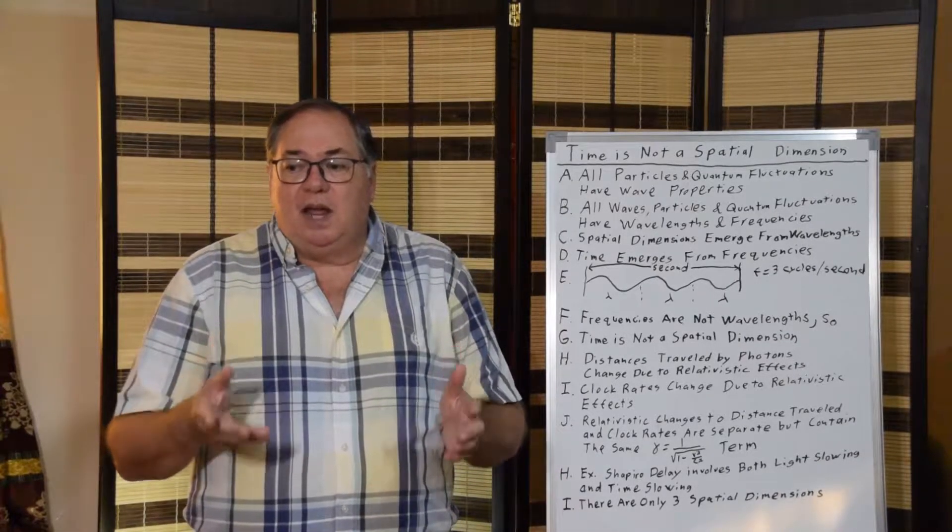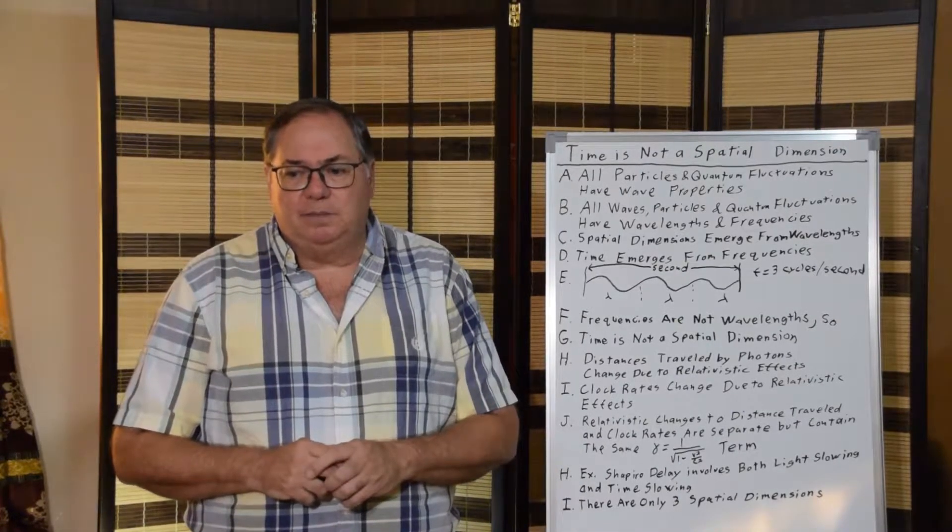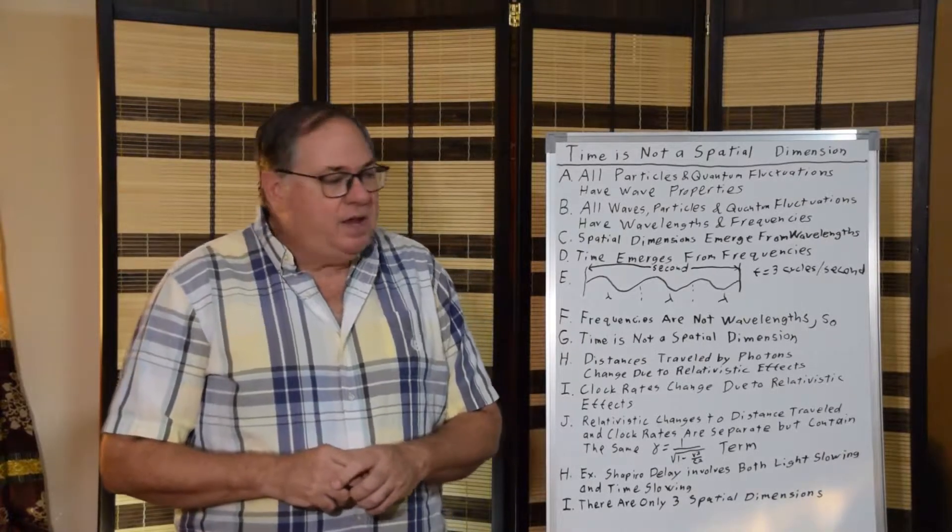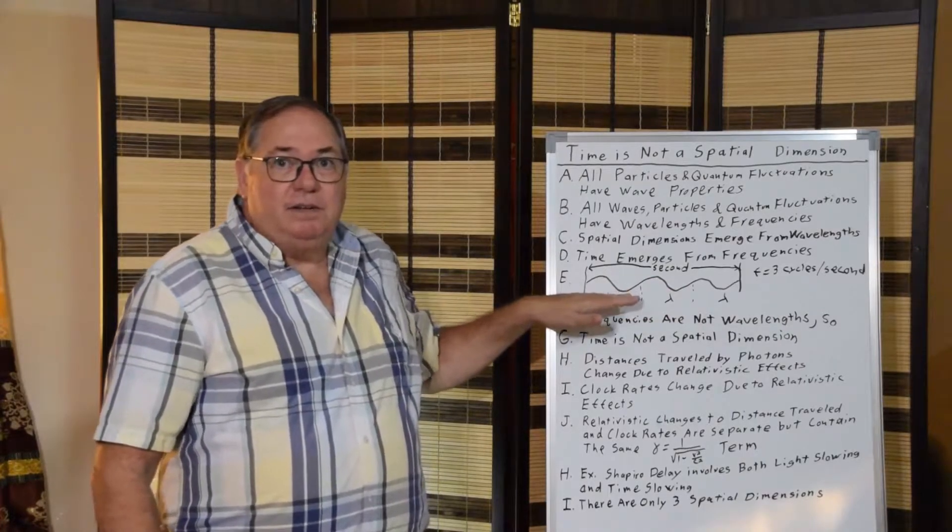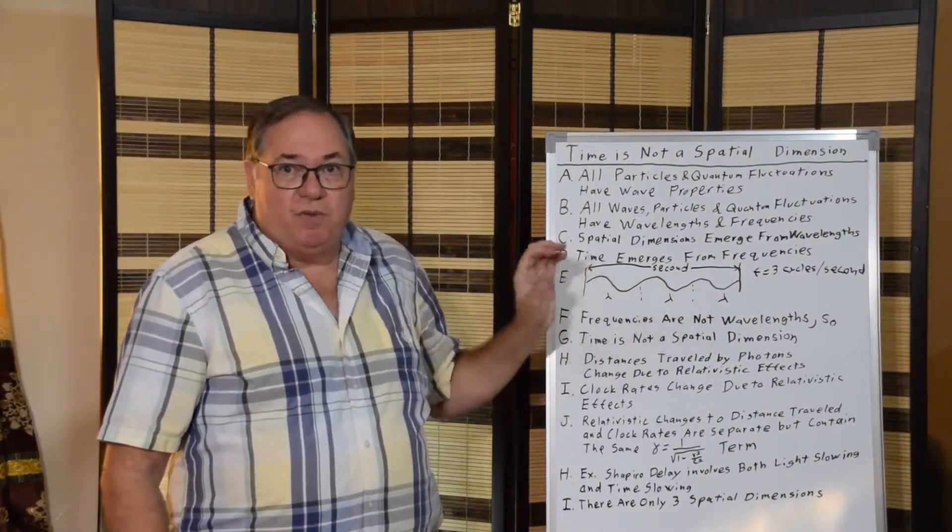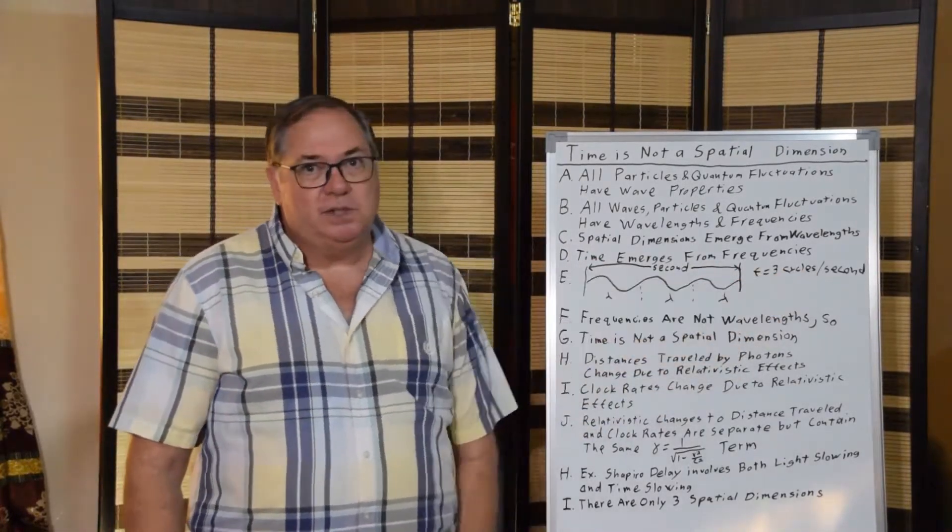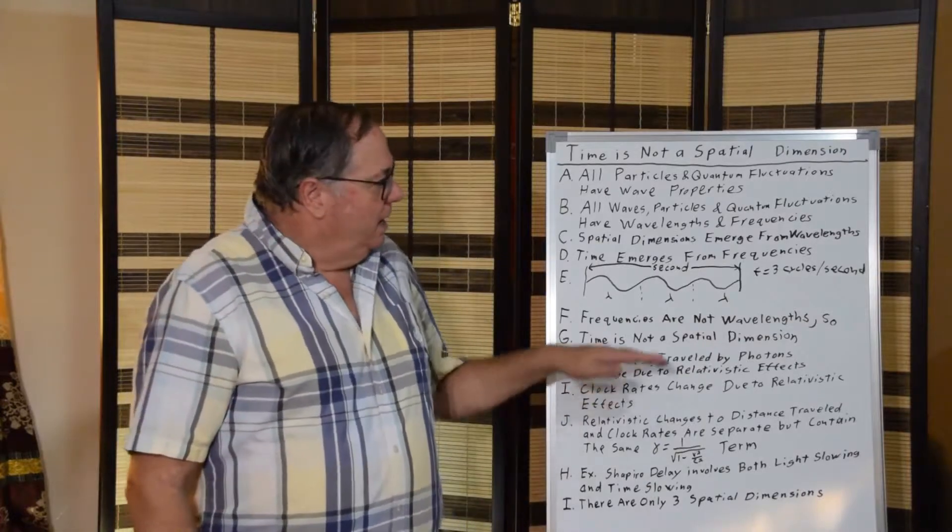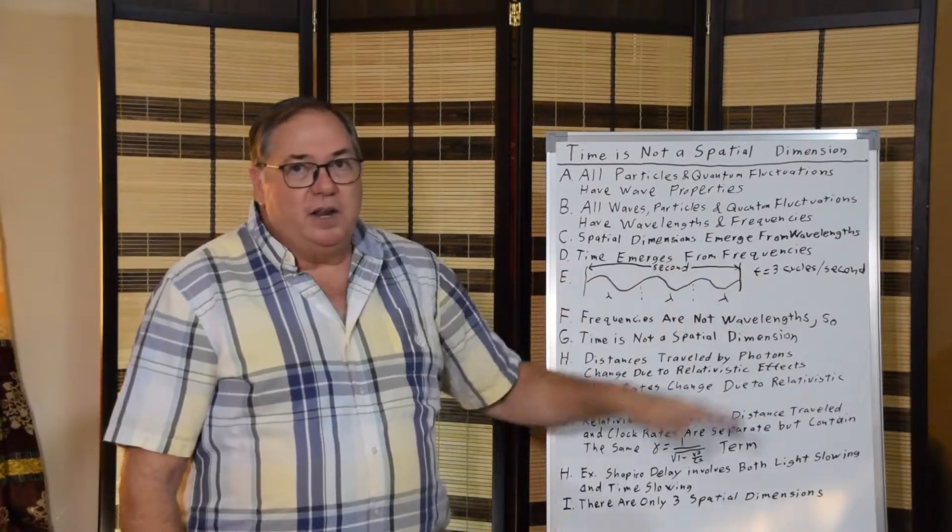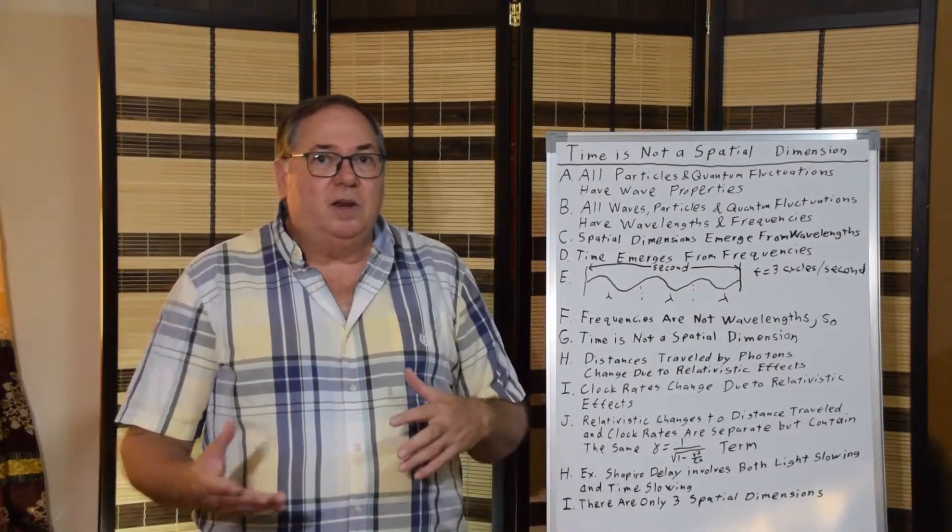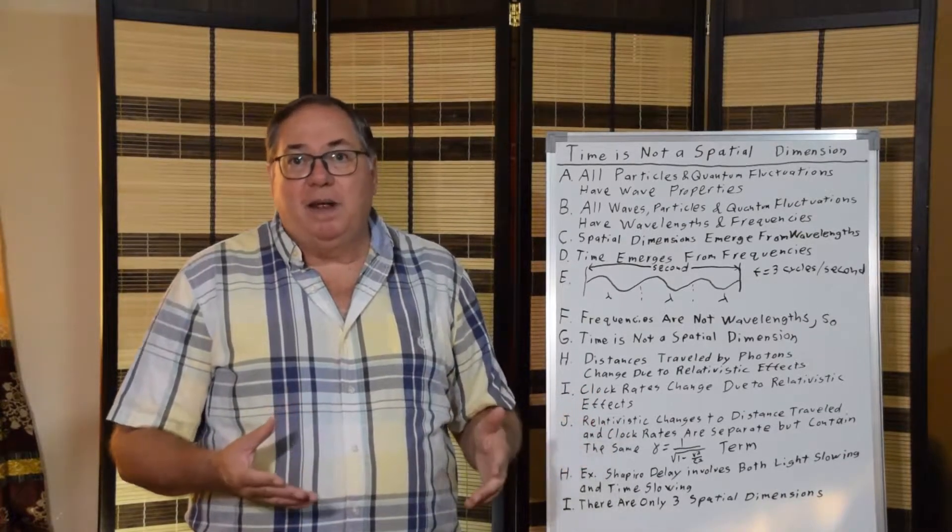If you look at a wave, in this case I've drawn a wave with three wavelengths over one second, so it has three cycles per second. The quantum field, the number of cycles, the number of waves per unit time, the unit time, and the actual wavelength are independent of each other.